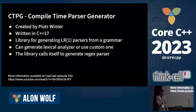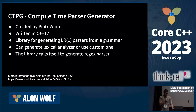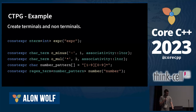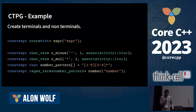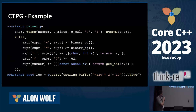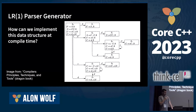We talked about an LL1 library; now let's talk about an LR1. CTPG, or compile time parser generator, is written in C++17 and created by Piotr Winter. We can use the library to generate an LR1 parser from a grammar. It can also generate a lexical analyzer or use a custom one. In order to generate a parser, we first need to define all the terminals and non-terminals. The library supports declaring operator precedence and associativity. It also supports regular expressions — it has an internal regex parser that is generated by the LR1 parser generator.